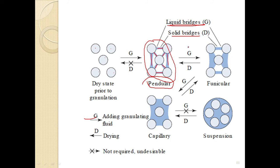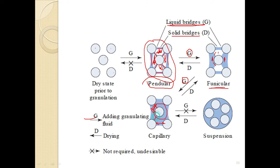When we add the next increment of granulating fluid, the liquid bridges start displacing air from between the particles. The red area indicates air present in the pendular state. In funicular state, this air starts to get displaced — you can observe the air displacement beginning. That state where air displacement starts is called the funicular state.